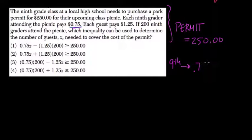So for 9th graders, it's $0.75 per person X. Guests, however, are different. The guests will probably pay more, right? Guests will pay $1.25 per guest. I'll write G for guest.